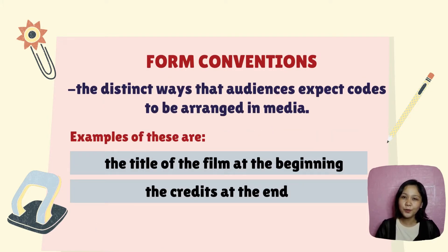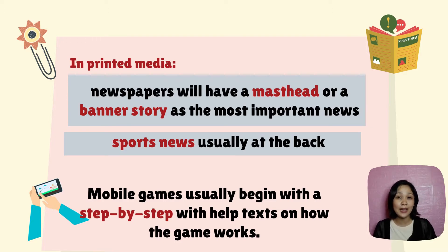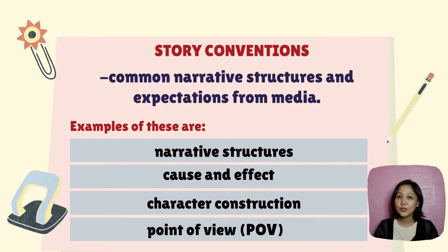Form conventions are the distinct ways the audience expects codes to be arranged in media. Examples include the title of a film at the beginning or the credits at the end. In printed media, newspapers are expected to have a masthead or banner story as the most important news, with sports news usually at the back. Mobile games usually begin with step-by-step help text on how the game works.